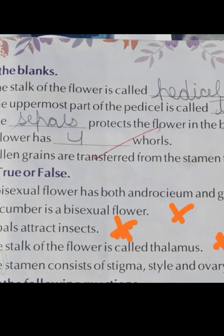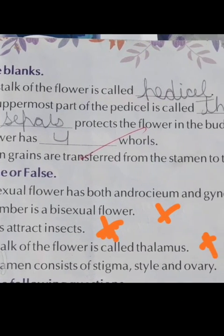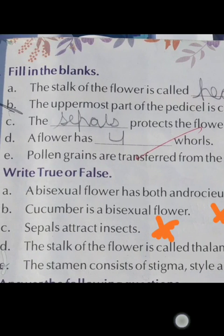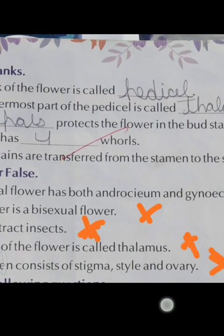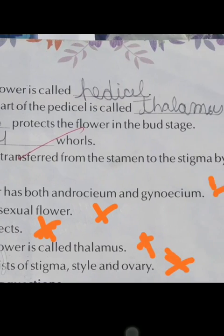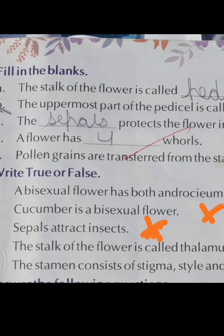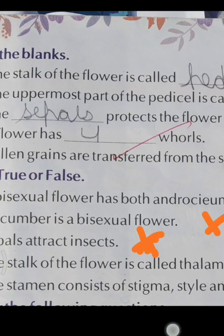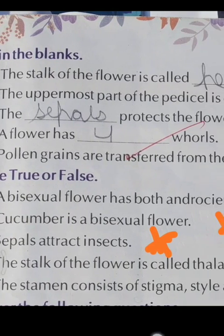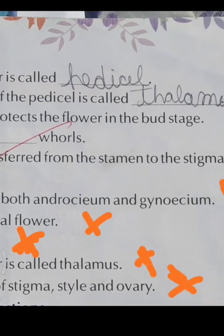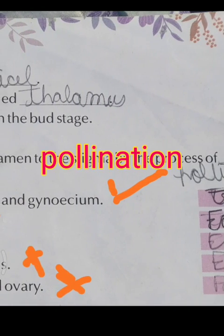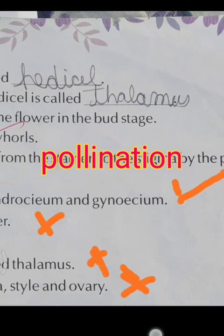The uppermost part of the peduncle is called the thalamus. C part: sepals protect the flower in the bud stage. A flower has four whorls. E part: pollen grains are transferred from stamens to the stigma by the process of pollination.